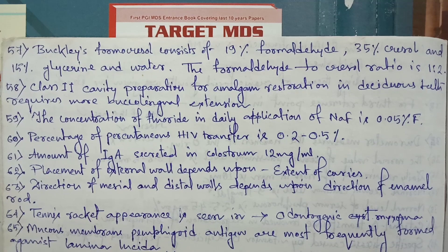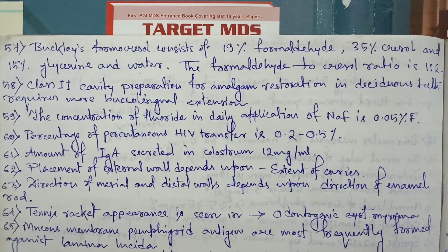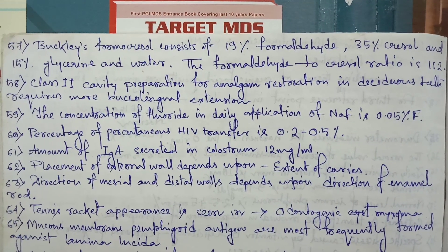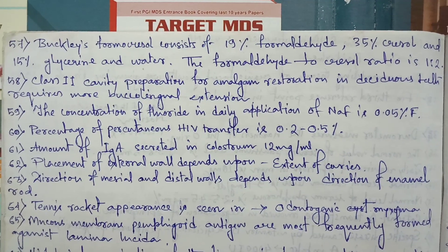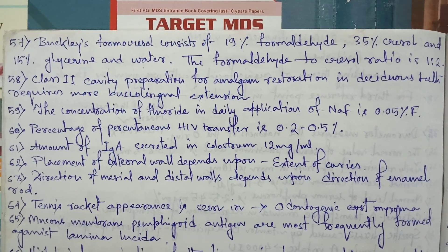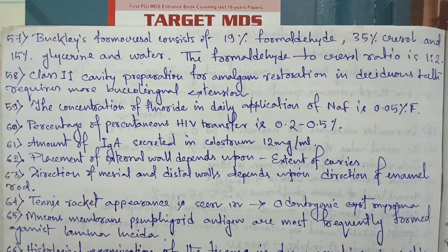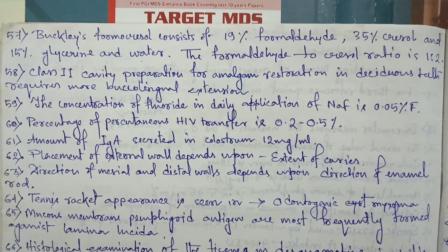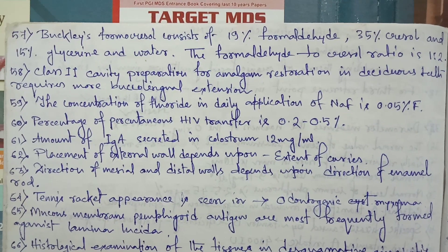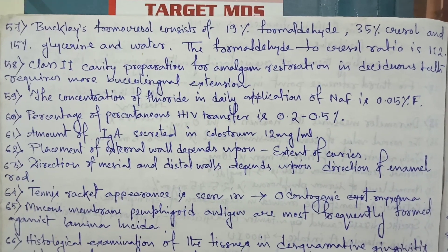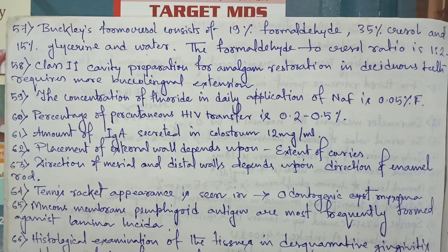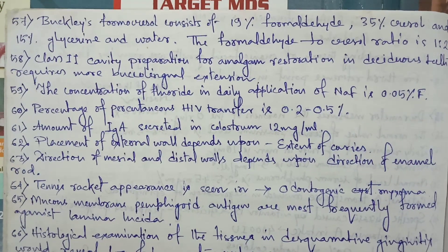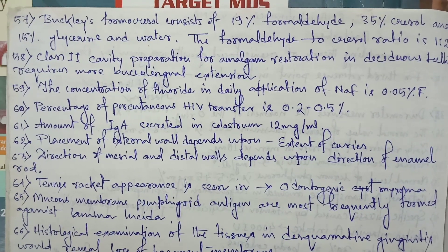Class 2 cavity preparation for amalgam restoration in deciduous teeth requires more buccolingual extension. The concentration of fluoride in daily application of sodium fluoride is 0.05%. Percentage of percutaneous HIV transfer is 0.2 to 0.5%.